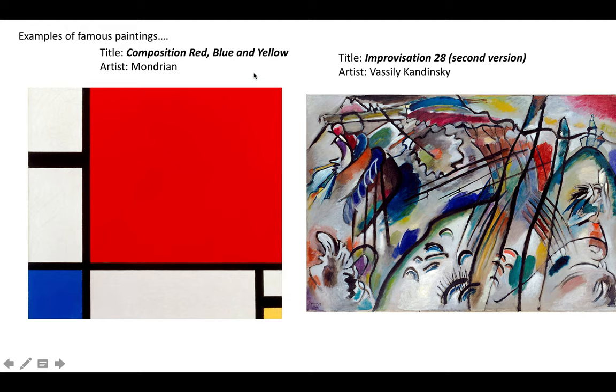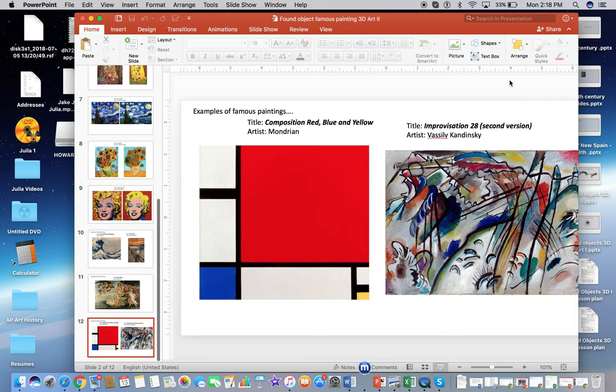If you want to do something more on the abstract side, there are two great options: Composition in Red, Blue and Yellow by the artist Mondrian, and Improvisation 28, Second Version by the artist Vasily Kandinsky. Hopefully this helps get you moving. If you have any questions, feel free to email me at my school email — I look forward to hearing from you. Take care!